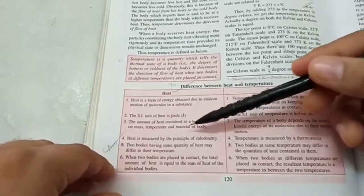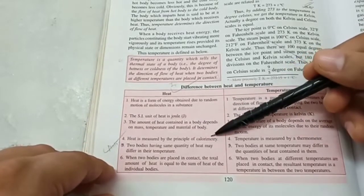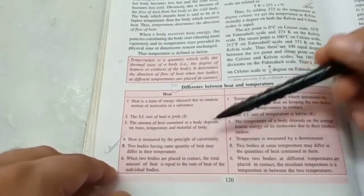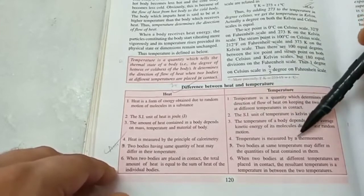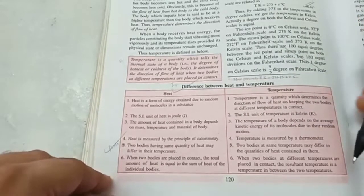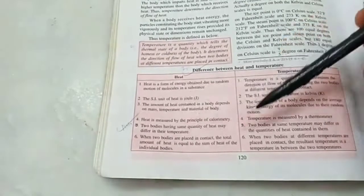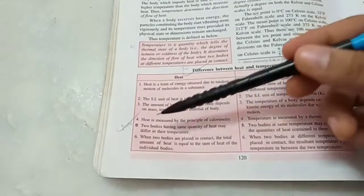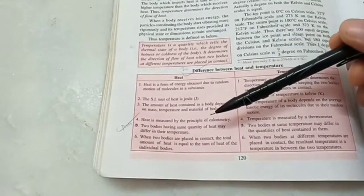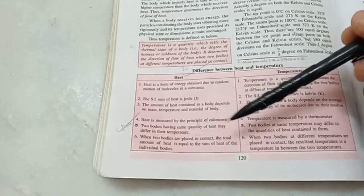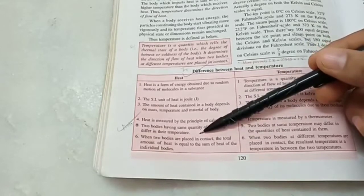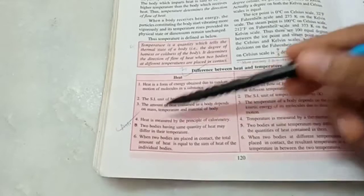The amount of heat of a substance can be measured by the principle of calorimetry, which you will study in 10th standard, whereas temperature is measured by a thermometer. The fifth point is not a point of difference, it's just a note. That means, if two bodies have the same amount of heat, say, 50 Joule and 50 Joule, still their temperatures may be different, because heat depends not only on temperature, but also on mass and material.